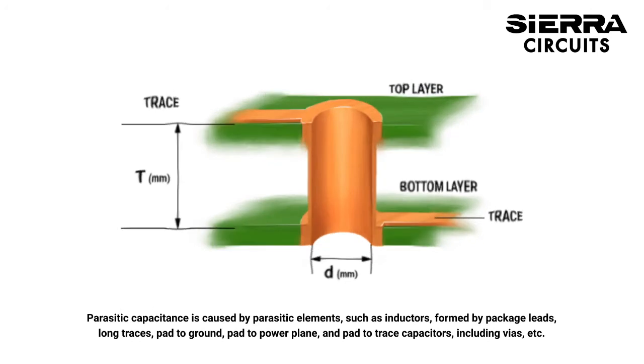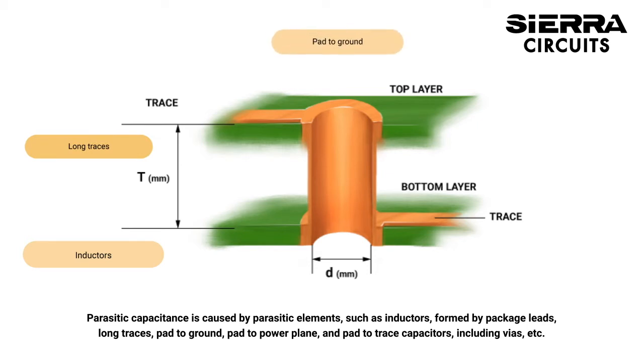Parasitic capacitance is caused by parasitic elements, such as inductors formed by package leads, long traces, pad-to-ground, pad-to-power plane, and pad-to-trace capacitors.